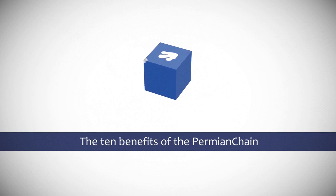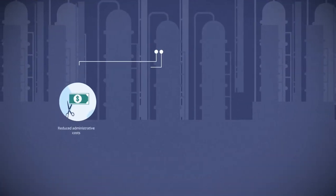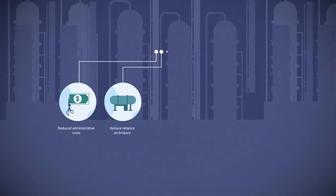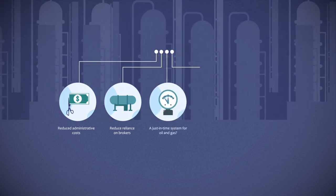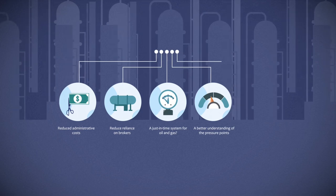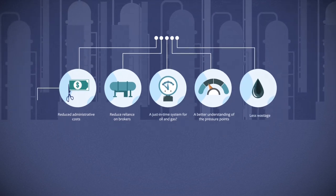We'd like to introduce you to PermianChain, a blockchain-based platform that brings 10 benefits. It reduces administrative costs, reduces reliance on brokers, creates a just-in-time system for oil and gas, leads to a better understanding of pressure points, and reduces wastage.